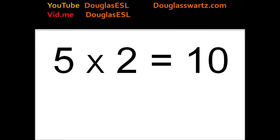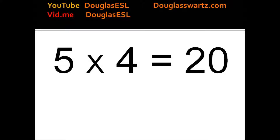5 times 2 equals 10. 5 times 3 equals 15. 5 times 4 equals 20. 5 times 5 equals 25.